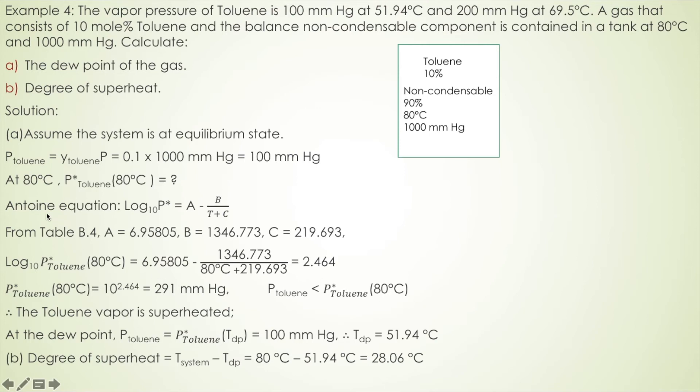In this problem, you don't always have to calculate the vapor pressure at the system temperature. The reason I calculated that is because I want to show you how to determine if the toluene vapor is superheated at the system temperature or not. Obviously, because the partial pressure of toluene is less than the vapor pressure of toluene at the system temperature, we can conclude that the toluene vapor is superheated.